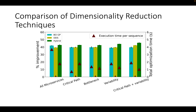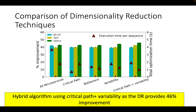In this slide, we compare different dimensionality reduction techniques. Similar to the previous graph, on the left y-axis we have the percentage improvement over the default configuration, and on the right y-axis we have the optimization time. Here we only consider Bayesian optimization, DDS, and hybrid. On the x-axis we have the different dimensionality reduction techniques. As we can see, the hybrid algorithm using critical path plus variability — that is, the top five microservices that show the highest variance along the critical path — provides up to 46% improvement.